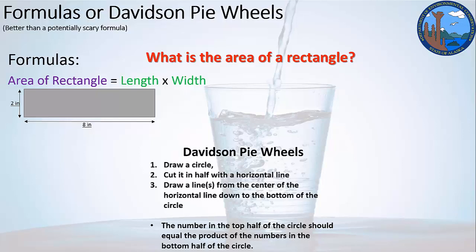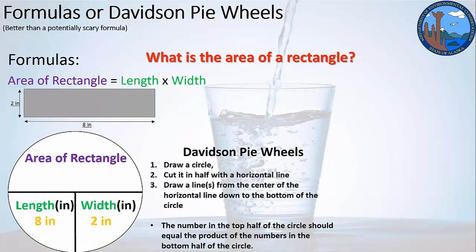So this is what is the area of a rectangle. So we've got a rectangle that's two inches by eight inches. What we want to do is draw a circle, cut it in half, and then draw a line from the center of the horizontal line to the bottom of the circle. So now we have a Davidson pie wheel and we have three different sections. We want to fill in with the variables and the information that we have. So we've got eight inches as the length, two inches as the width, and so the area of the rectangle is going to be 16 inches squared.